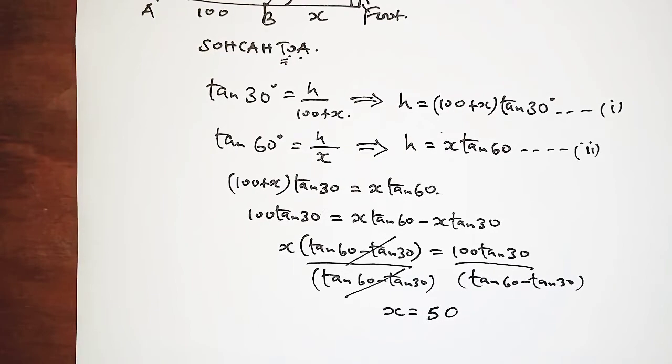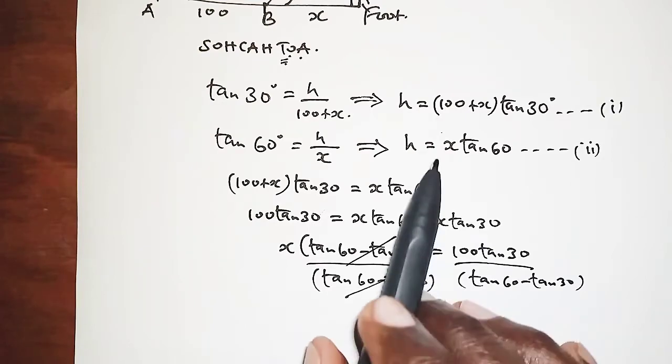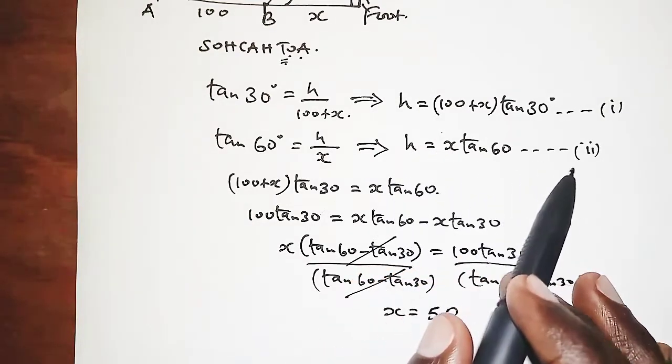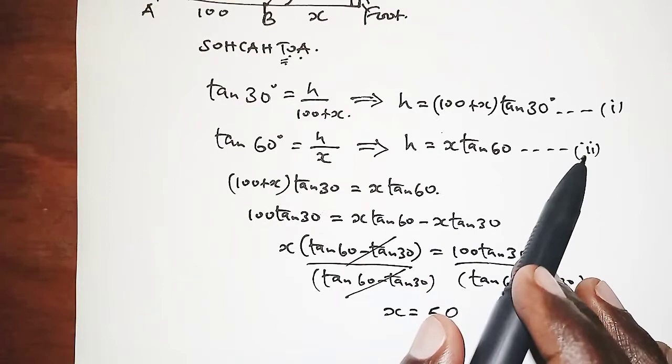So once we've got X as 50, remember we are interested in H, but H we have an expression here—equation 1 or equation 2. I believe equation 2 makes work easy.